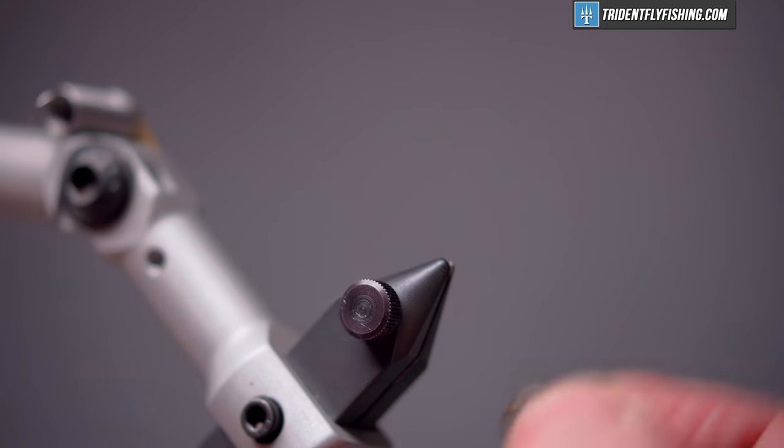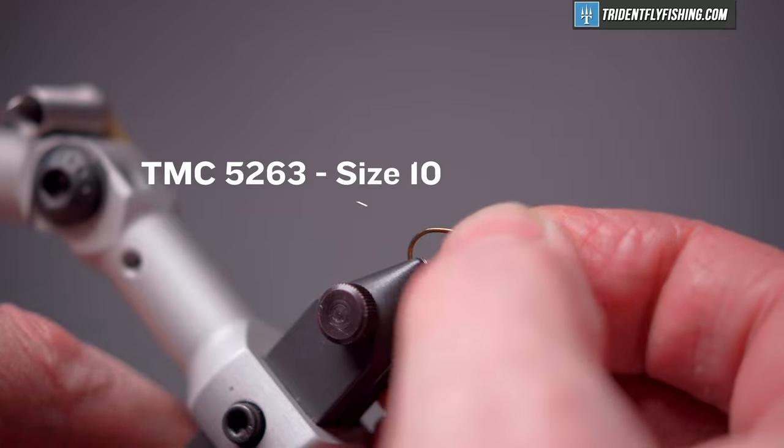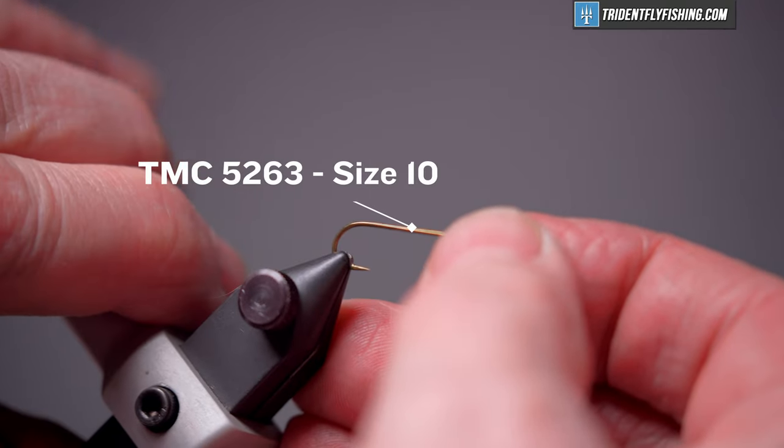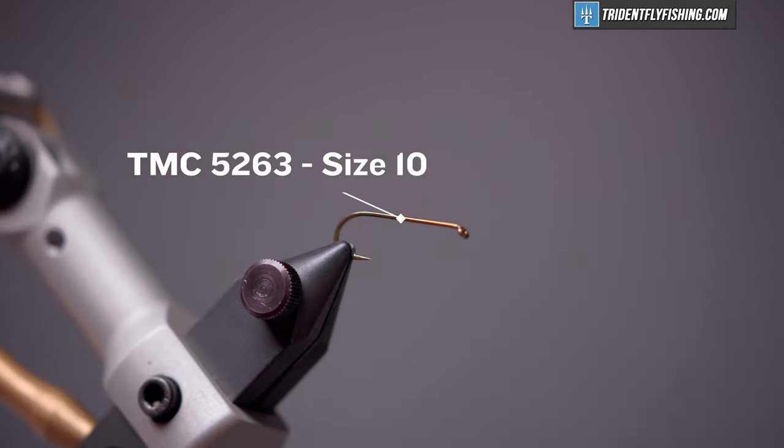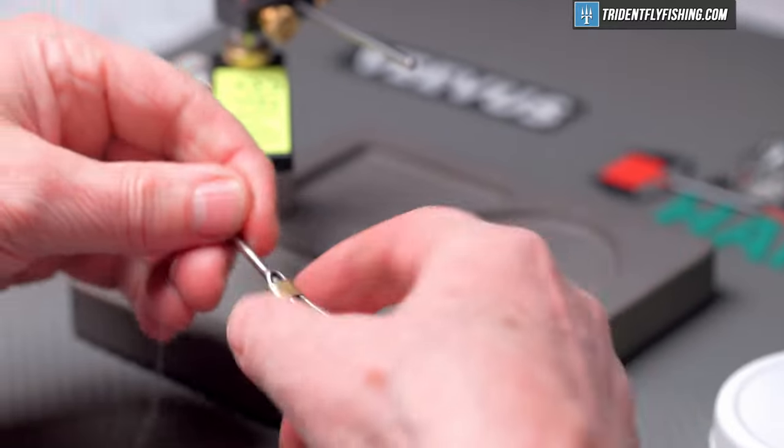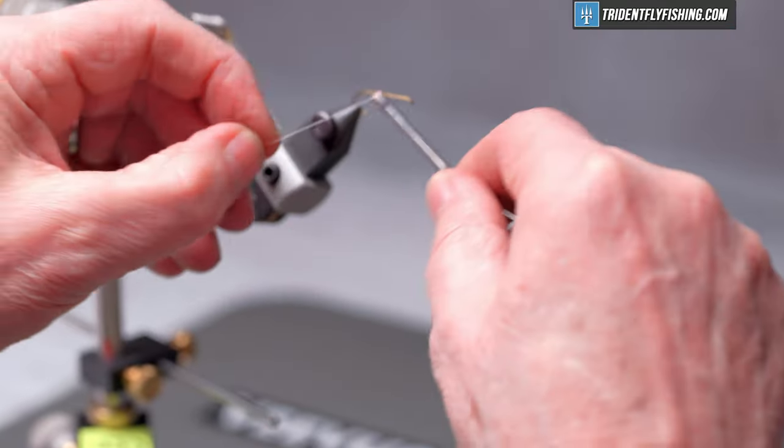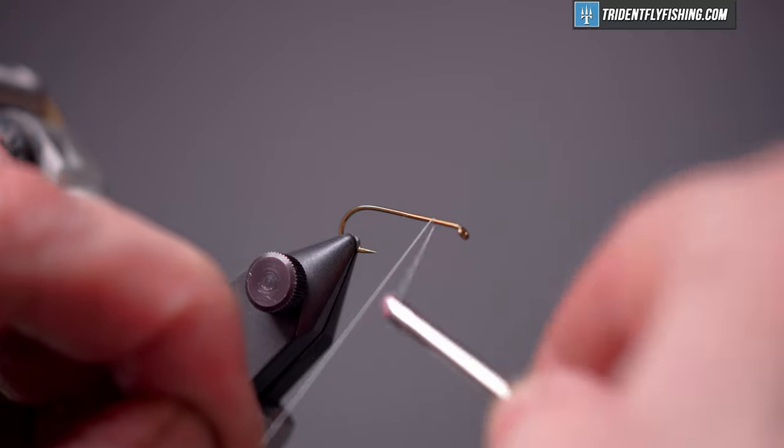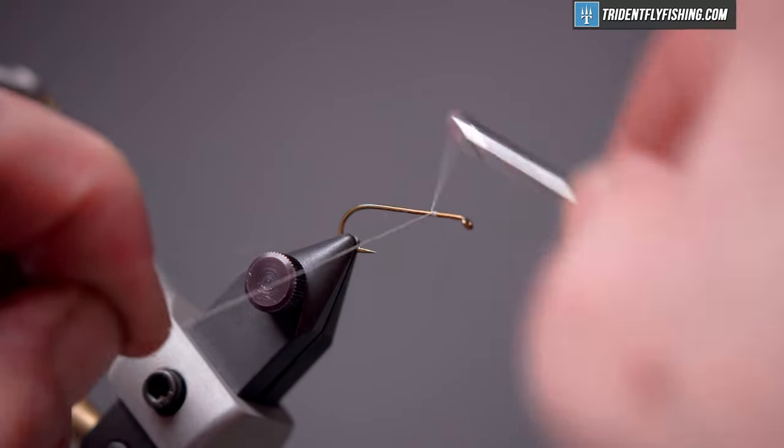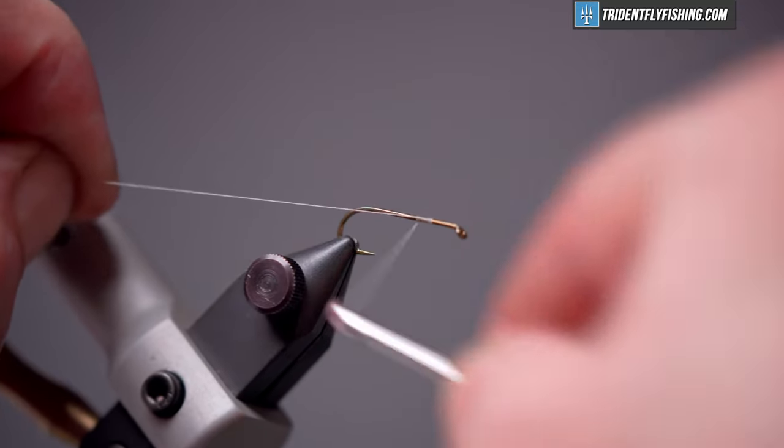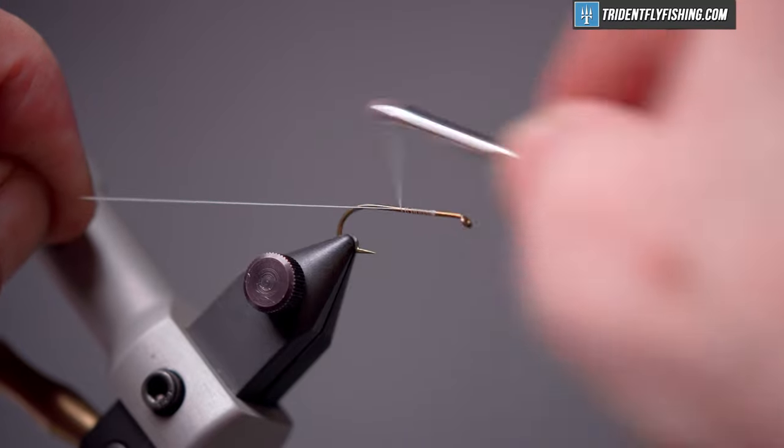The hook we're going to use today is a TMC 5263, their three extra long streamer hook. This one's a size 10 and our thread is Danville's 6-0 in white. We're going to start with about a hook shank or eye length and a half behind the hook eye and wrap back to the start of the bend of the hook.